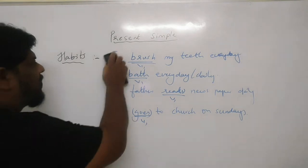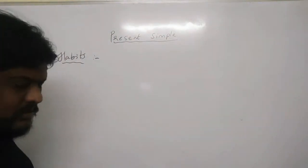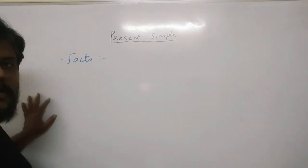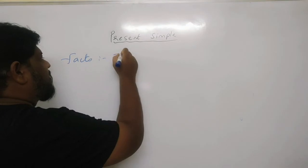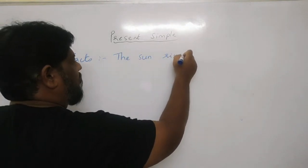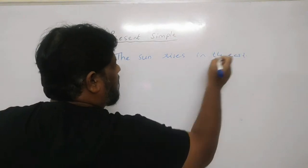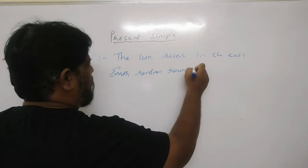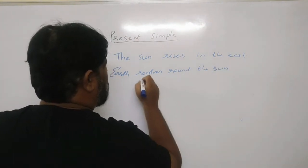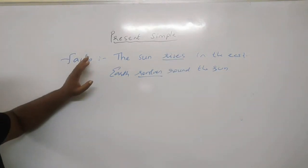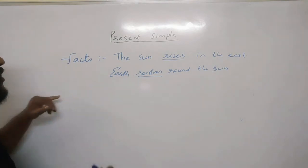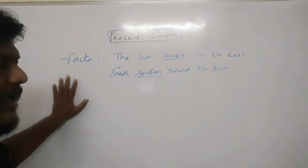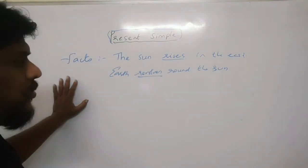Apart from habits, present simple is also used for universal facts. For example, 'The sun rises in the east,' or 'Earth revolves around the sun.' These are universal facts, and you can tell them in the present simple itself. So these are the examples of the present simple.